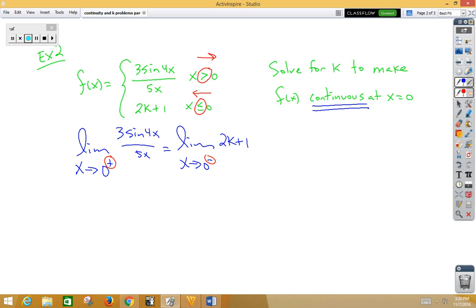Now, we've worked with this limit before and there's a shortcut. We could plug in and get 0 over 0 and do L'Hôpital. If we did L'Hôpital, we would get 3 cosine 4x times 4 over 5. Then when we plug in, we would get our answer.